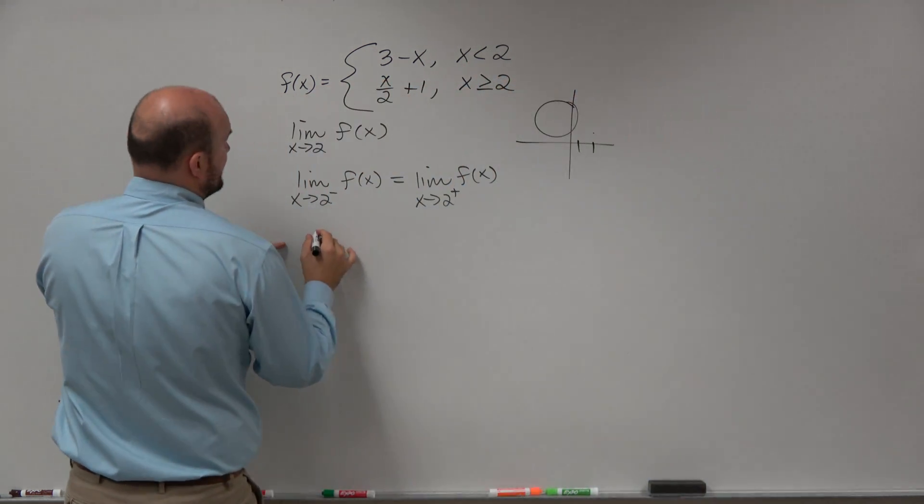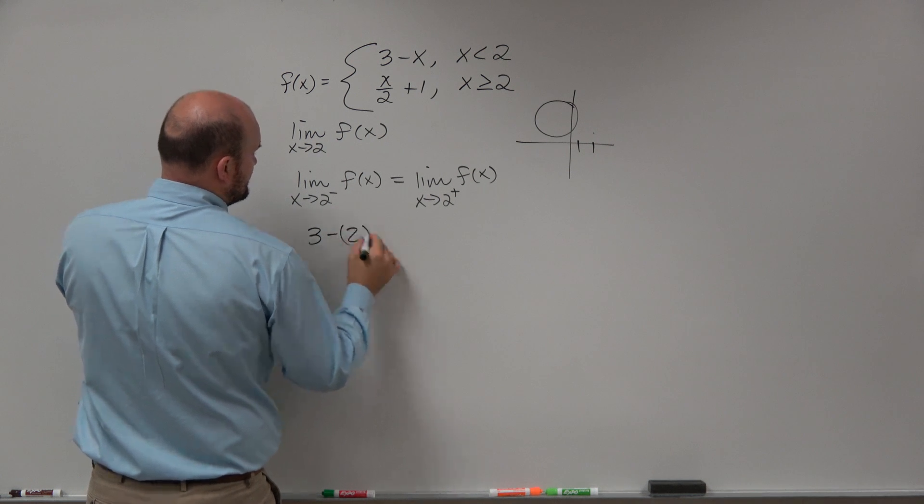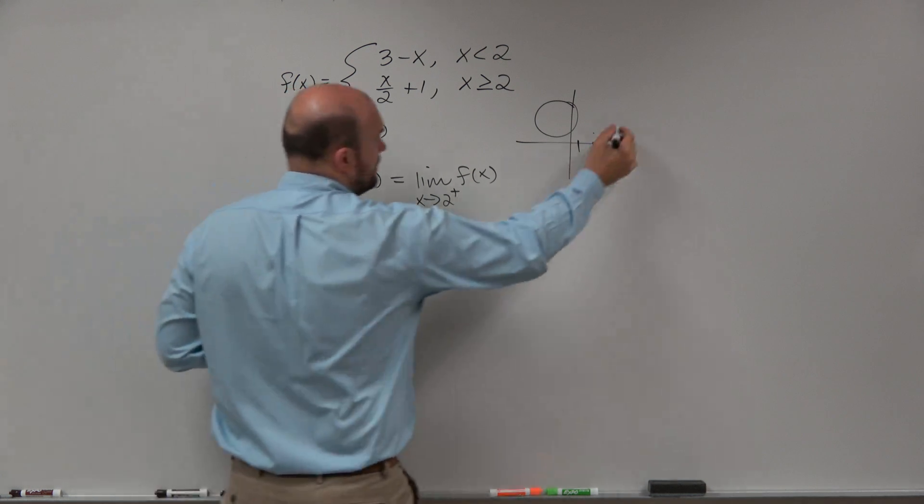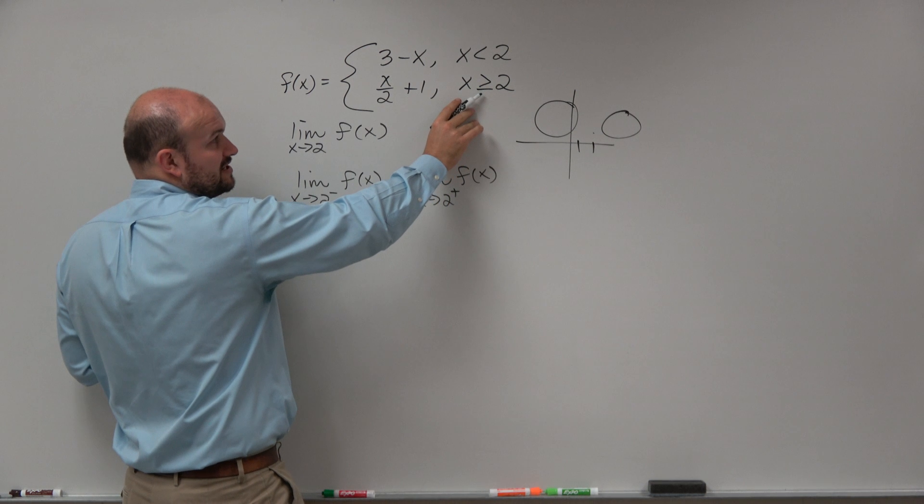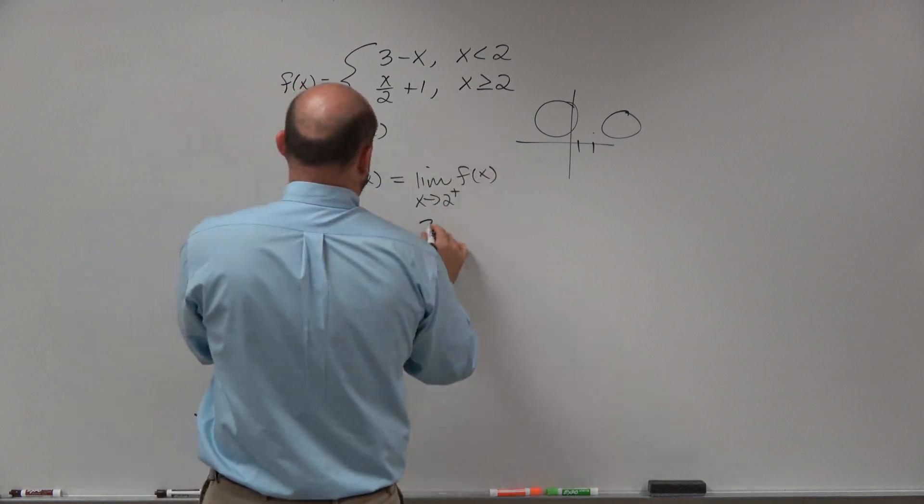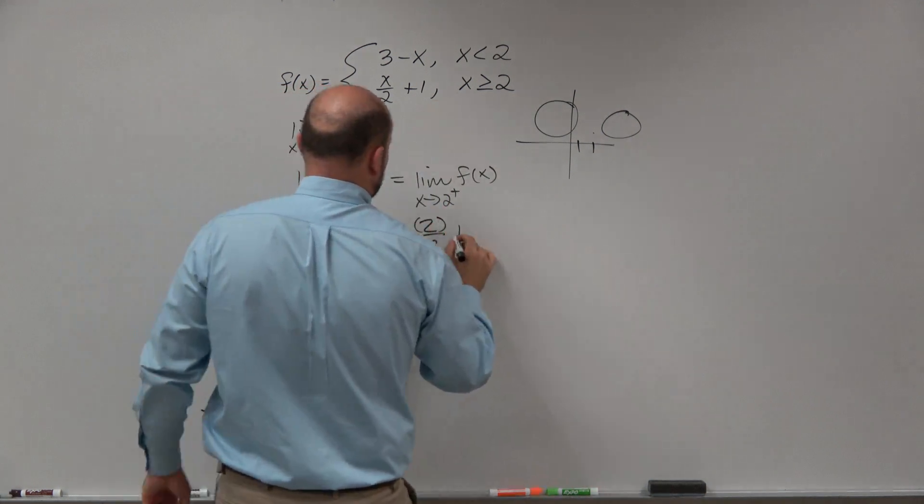So by plugging in 2, we'd have 3 minus 2 has to equal the right hand limit, which is all x values that are greater than 2, which is going to be 2 over 2 plus 1.